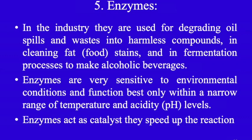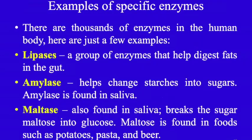In industries, enzymes are used for degrading oil spills and wastes into harmless compounds, cleaning fat stains, and in fermentation to make alcoholic beverages. Enzymes are sensitive to environmental conditions and function best within a narrow range of temperature and acidity or pH level. Our body has thousands of enzymes. One example is lipases — a group of enzymes that help in digestion of fats in the gut. Another is amylase, which helps change starch into sugars.